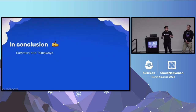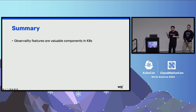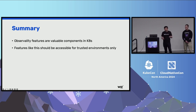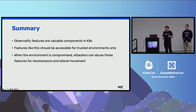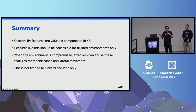So these are our takeaways from researching service mesh environments. First: observability features like the many we've seen here today are very valuable components in Kubernetes environments — that's why they're attached to virtually every single Kubernetes component. However, it's very clear that they were designed to be accessible from trusted environments only. Once attackers are able to reach them, they enable reconnaissance, lateral movement, privilege escalation, and all the other sorts of things we've seen here today. This is not a problem limited to Linkerd and Istio only — it's actually pretty standard in Kubernetes components to have these observability features accessible without authentication, assuming that environments are trusted. When they're not, this can introduce all the risks we've seen here today.